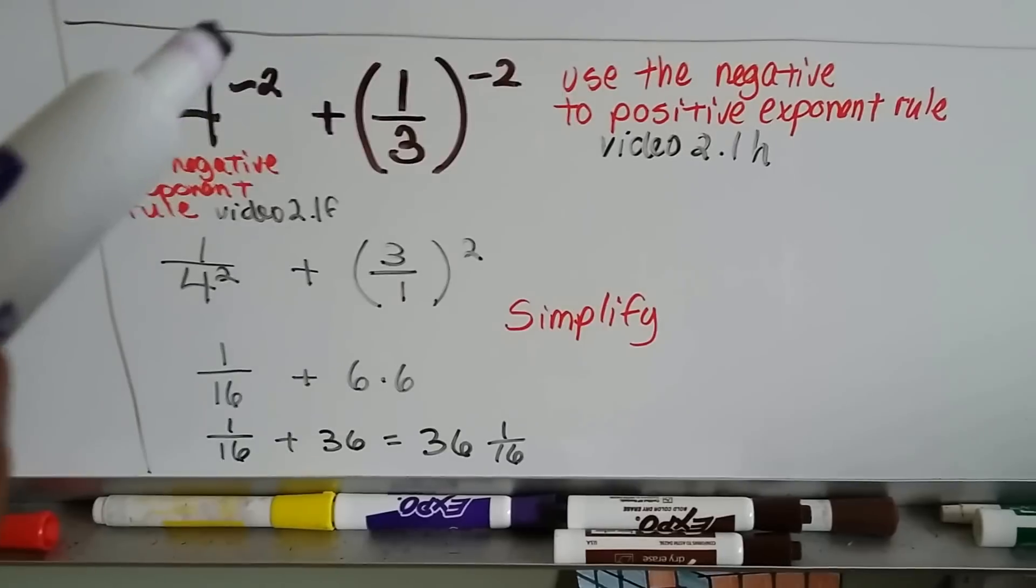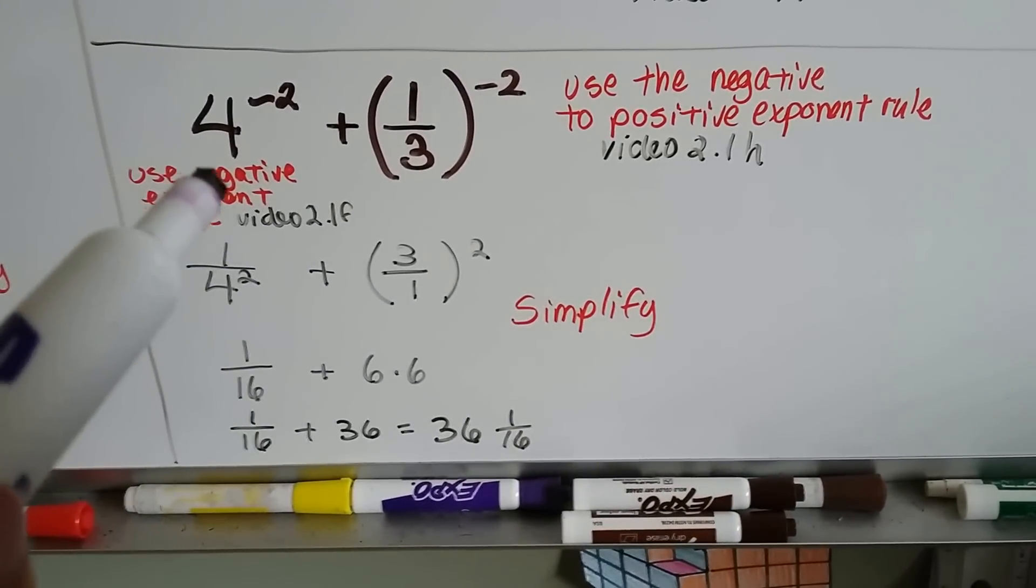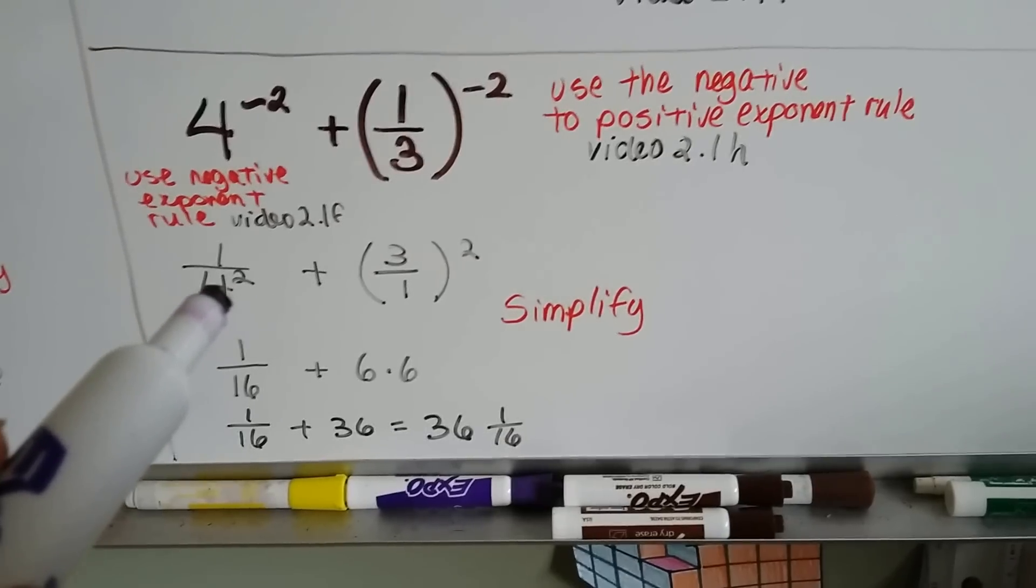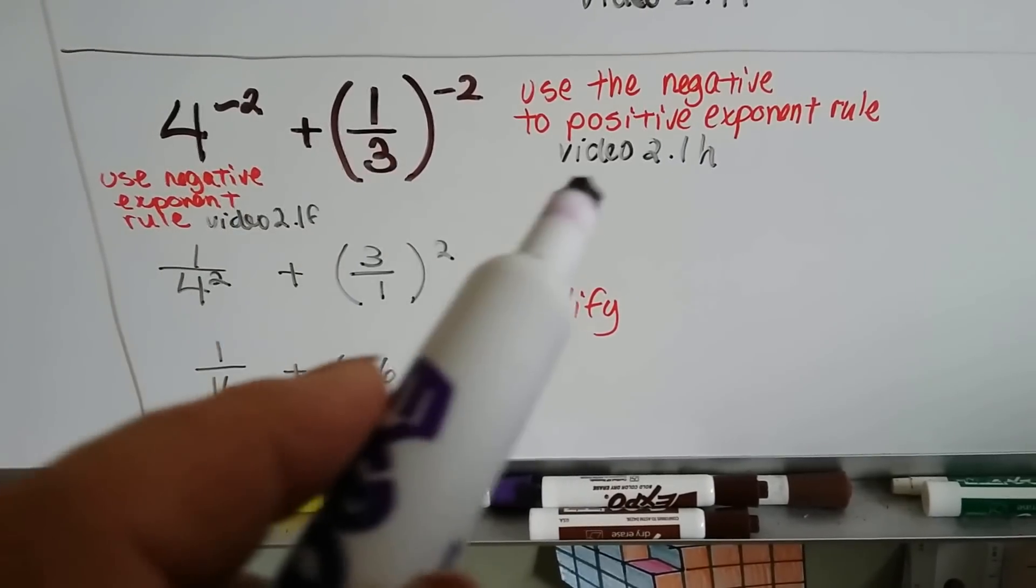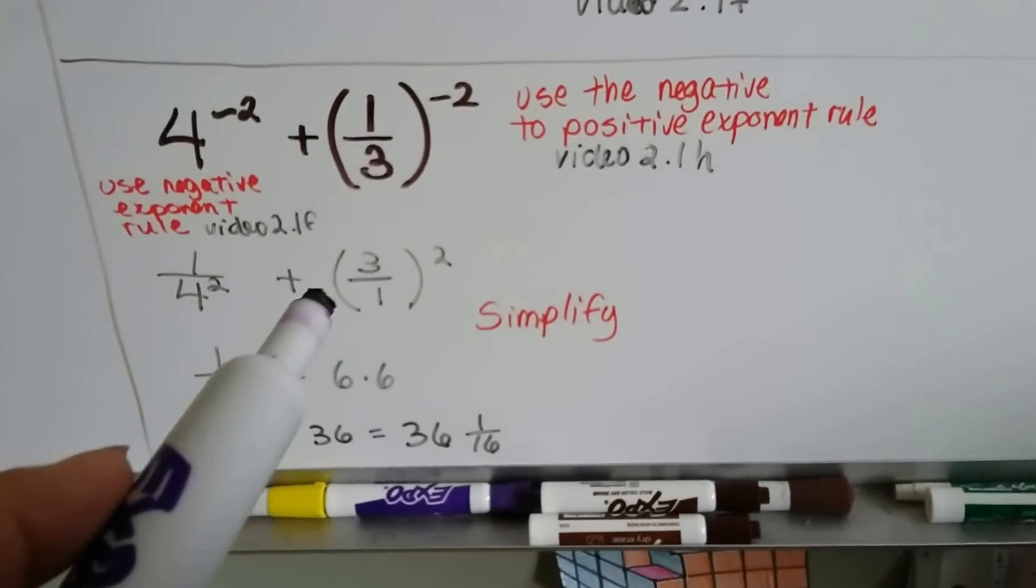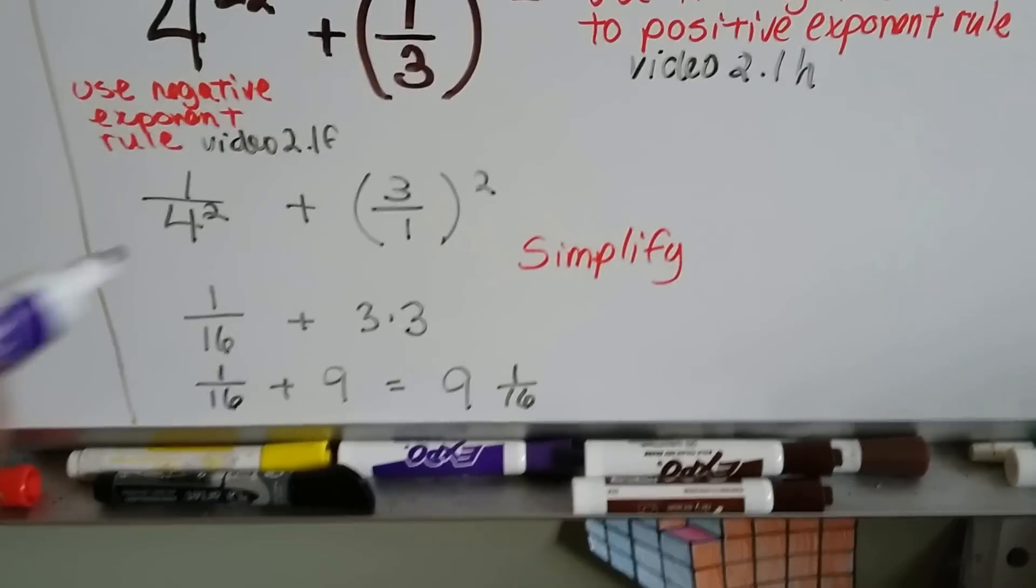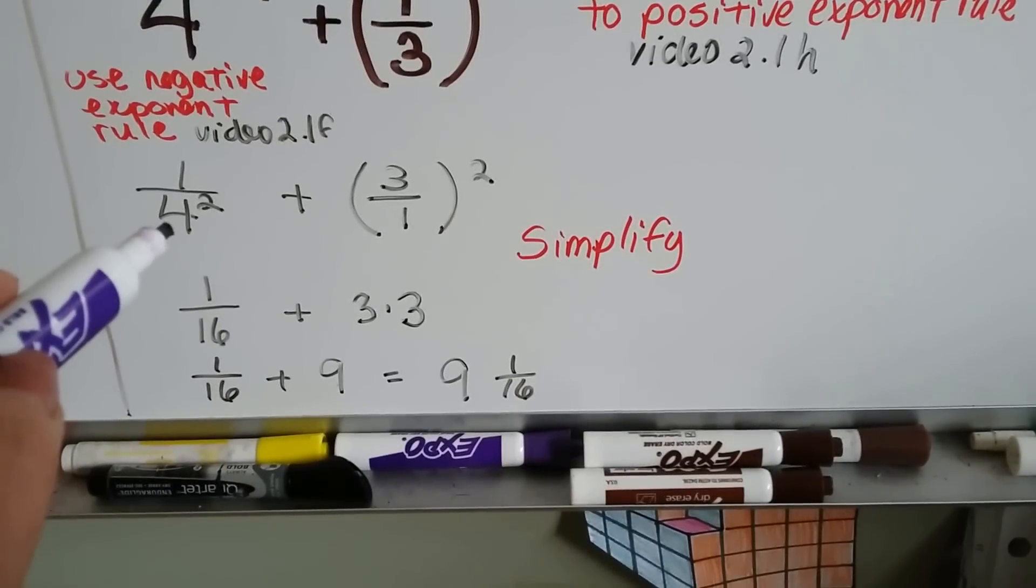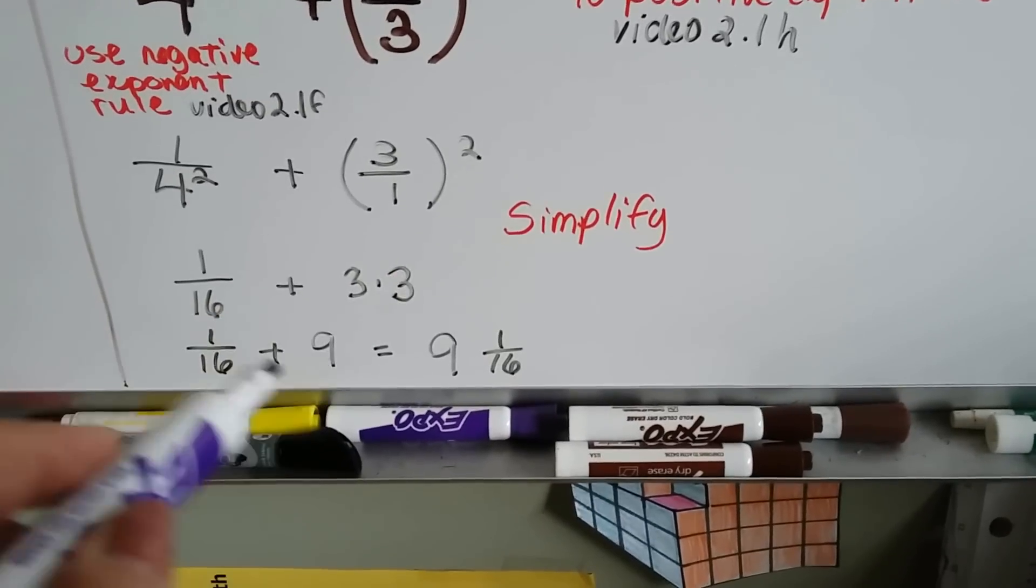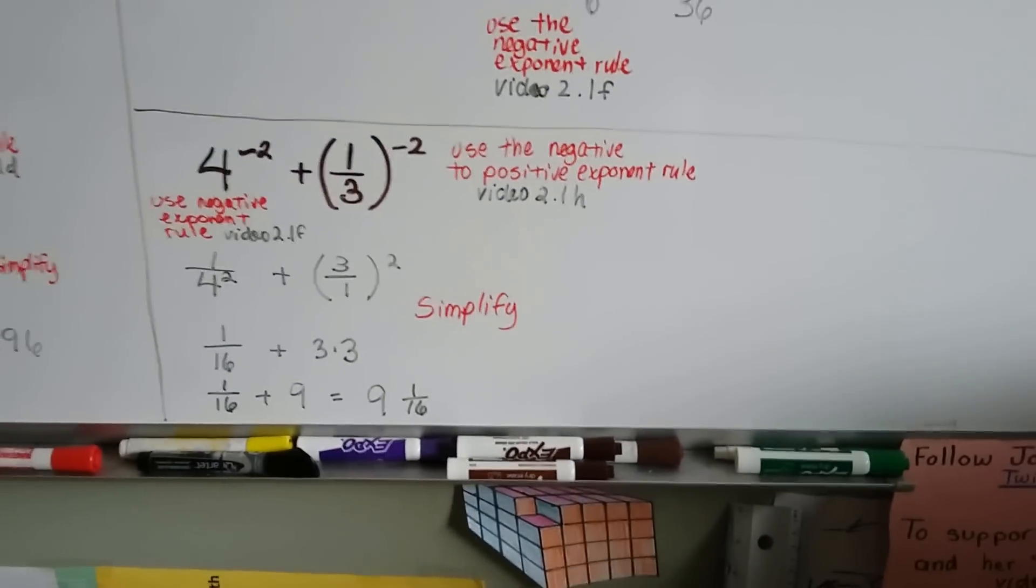Let's try this one. We've got 4 to the negative 2nd power plus 1/3 to the negative 2nd. We can use the negative exponent rule from video 2.1f for this one, and it becomes 1 over 4 to the 2nd power. And this one, we can use the negative to positive exponent rule from video number 2.1h, and we flip it around to its reciprocal and get a positive exponent. Now we've got 3 over 1 to the 2nd power. That's just 3 to the 2nd power. So now, this becomes 1 over 4 times 4, or 1/16, and this is going to be 3 to the 2nd power. That's 3 times 3. We add them together, and we've got 1/16 plus 9. It equals 9 and 1/16 when we simplify it.